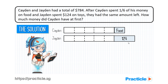Now it's time to add in the last piece of missing information. We still have the $784 — the total amount of money that Jayden and Caden started with. So everything we see in the model will add up to give us $784. Now that we have completed the model, we can easily use it to help us solve the question.